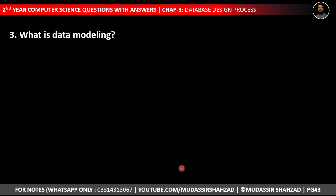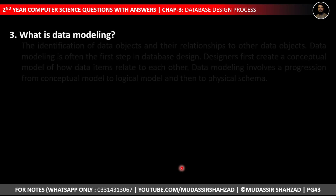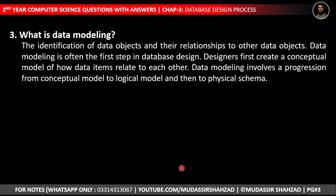The third question is: what is data modeling? Data modeling is the identification of data objects and their relationships to other objects. It is often the first step in database design. Designers first create a conceptual model of how data items relate to each other. Data modeling involves progression from a conceptual model to a logical model and then to a physical schema.